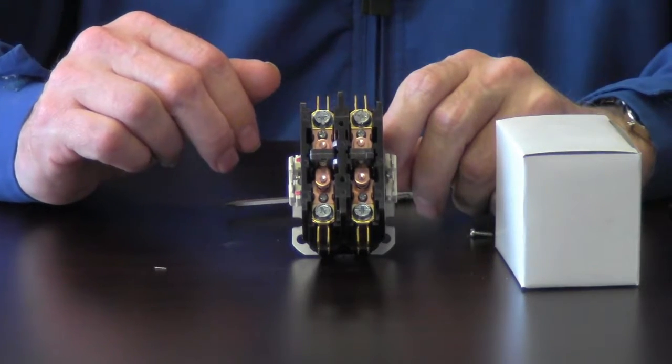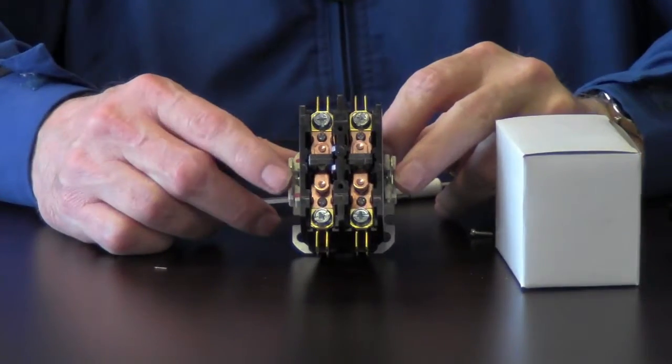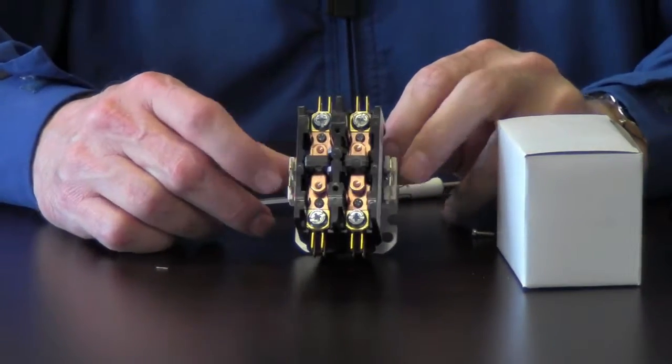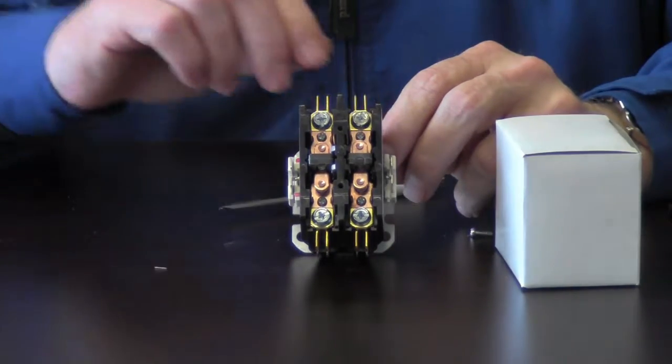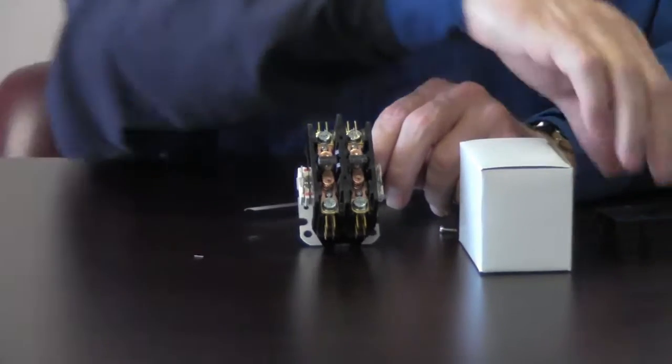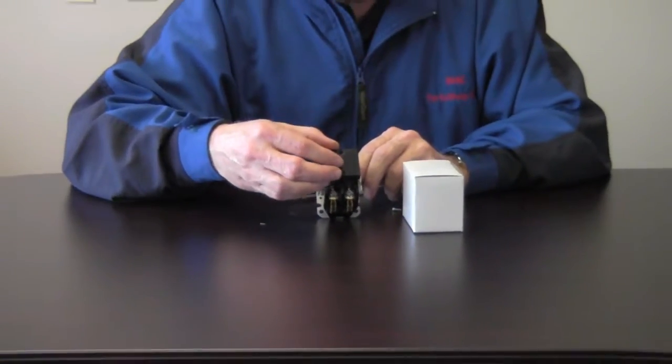So you definitely want to be careful and make sure your power is off. Of course here on either side is going to be your control voltage, which is your 24 volts. So enough on this. We'll go ahead and put our dust cover back on and let's go out and get started.